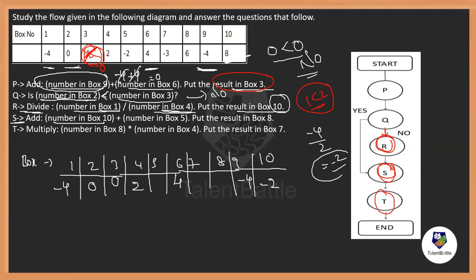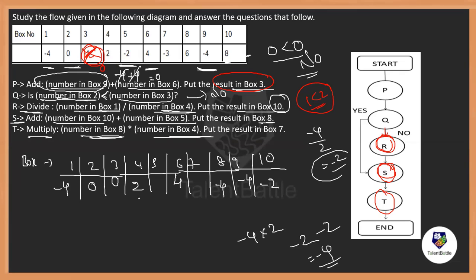Step S: box[10] + box[5]. Box[10] = −2 and box[5] = −2, so −2 + (−2) = −4. Place −4 in box[8]. Then multiply box[8] by box[4]: −4 × 2 = −8. Place −8 in box[7].